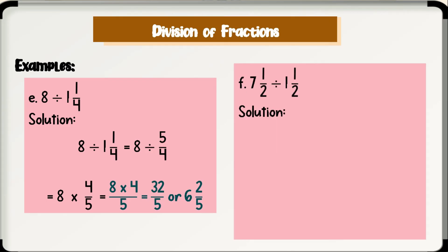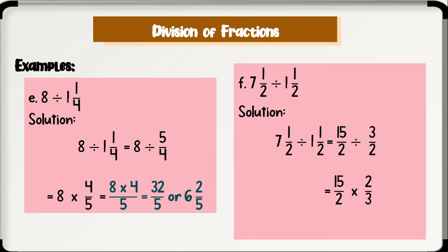Letter F: 7 and 1 half divided by 1 and 1 half. Solution: convert the mixed numbers into improper fractions — from 7 and 1 half divided by 1 and 1 half, it becomes 15 halves divided by 3 halves. Getting the reciprocal of the divisor and changing the operation, we now have 15 halves times 2 thirds. 15 and 3 have common factors, as do 2 and 2. Cancelling: 15 divided by 3 is 5, 3 divided by 3 is 1, and the 2s cancel, leaving us with 5 over 1, or simply 5. Therefore, 7 and 1 half divided by 1 and 1 half is equal to 5.